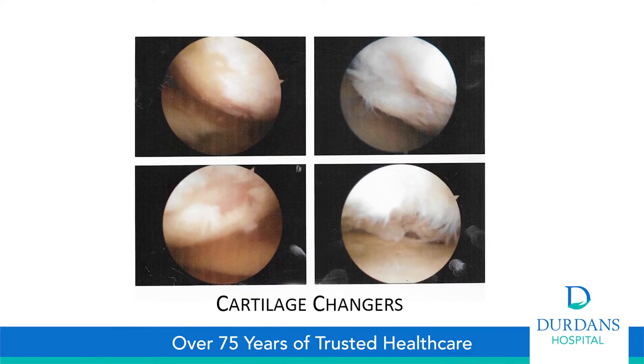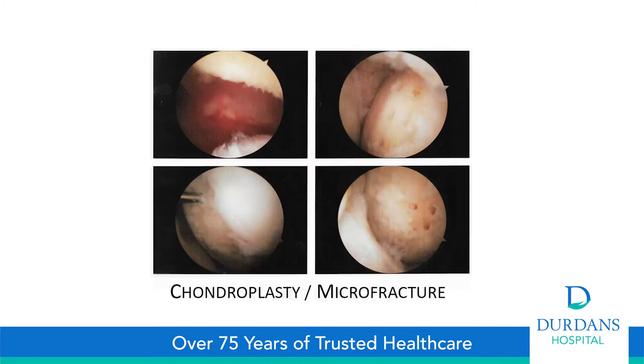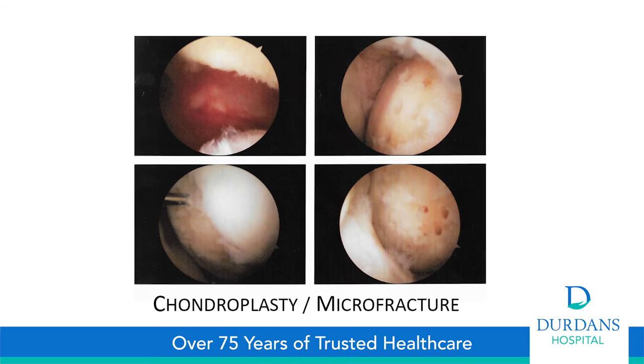Stem cell grafts are done when there are areas in the knee that are significantly damaged and can be covered with a graft of stem cells, with the expectation that cartilage will regenerate into that area of damage. The stem cells are taken from your own bone marrow, processed, and then placed in the knee where the cartilage is damaged. You can see in the picture how the bone is prepared and how the stem cell graft is placed, causing the cartilage to regenerate in that region and produce good cartilage tissue.